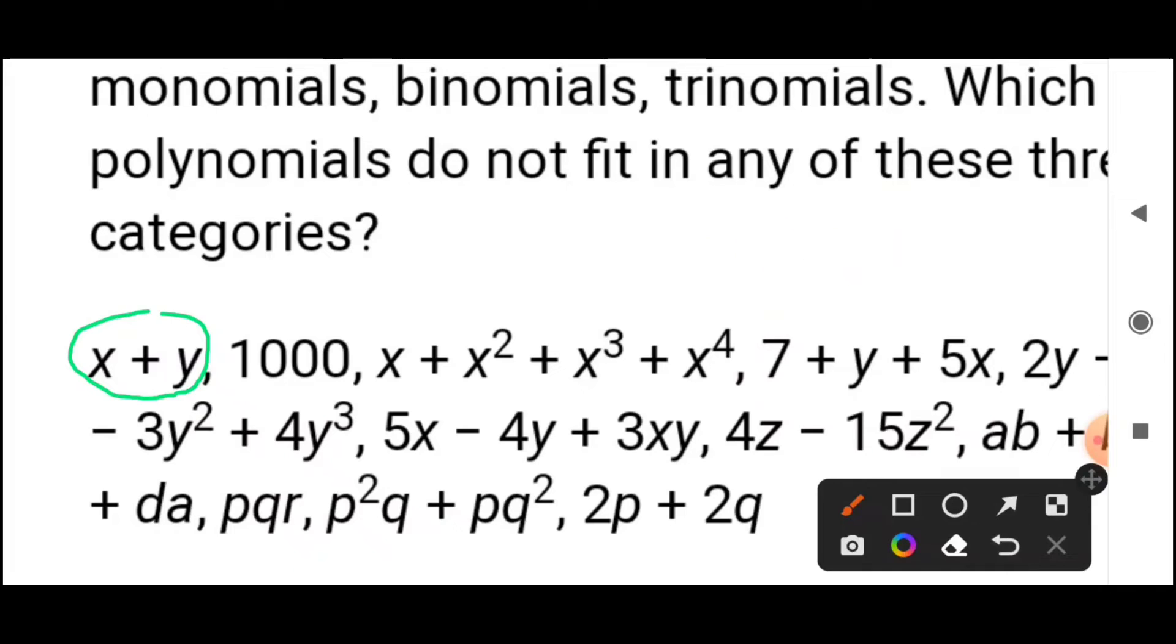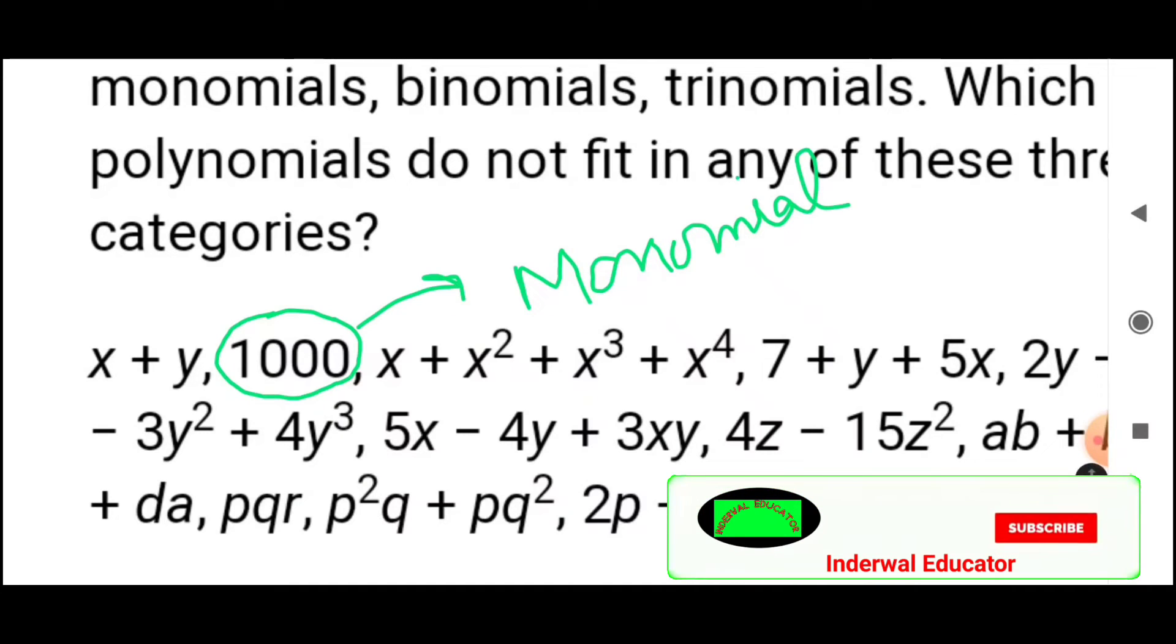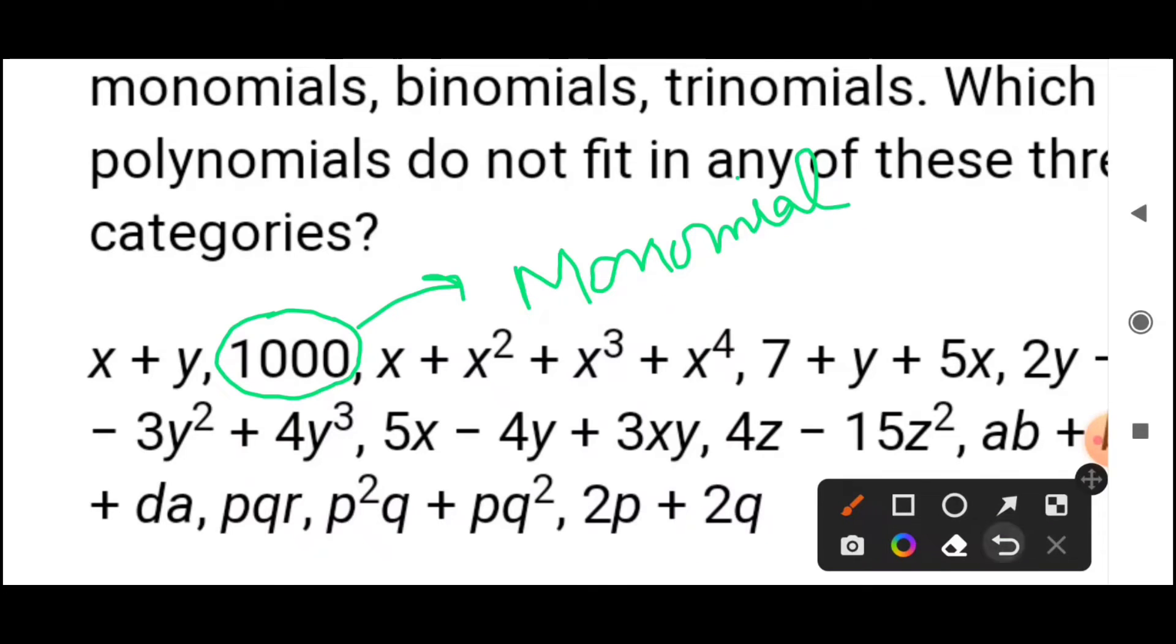Next, the next part is one thousand. See here, there's a comma. One thousand is a single number, just one term. So we call it monomial. Monomial means one, an algebraic expression having one term. Moving to the next part.